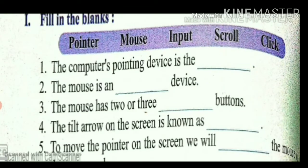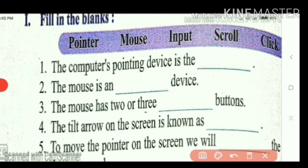In your computer book exercise, the first question is fill in the blanks. Some words are given. We want to choose the words and complete the blanks. First one: the computer's pointing device is the... which is the computer's pointing device? Mouse. M-O-U-S-E, mouse.